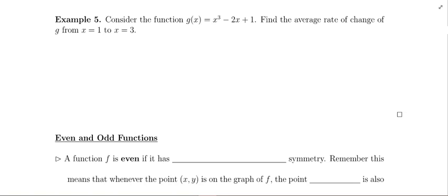Example 5: Consider the function g of x equals x cubed minus 2x plus 1. Find the average rate of change of g from x equals 1 to x equals 3. First thing to notice, we are interested in this function between these x values, the part of the function between x equals 1 and x equals 3.